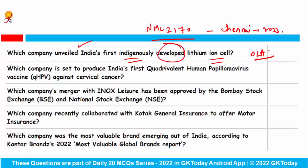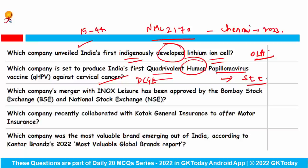Which company is set to produce India's first quadrivalent human papillomavirus (QHPV) vaccine against cervical cancer? The Drugs Controller General of India has approved India's very first QHPV vaccine against cervical cancer, which will be manufactured by Pune-based Serum Institute of India. Cervical cancer is the second most frequent cancer among women in India between the ages of 15 and 44. Also, the merger of PVR Cinemas with INOX Leisure has been approved by the Bombay Stock Exchange and the National Stock Exchange.